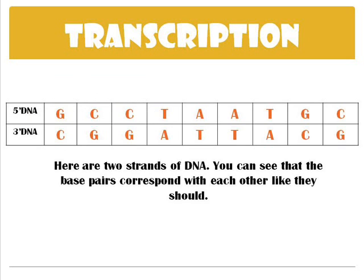It's most helpful to understand transcription if you can see it. On the screen you've got two rows of letters — each row represents a single strand of DNA. These two strands are usually wrapped around each other in a double helix shape. You can see C and G pairing with each other, and A and T pairing with each other.